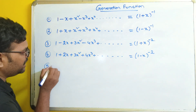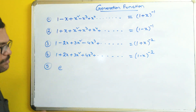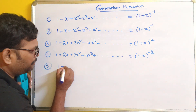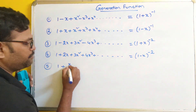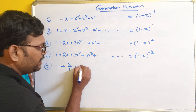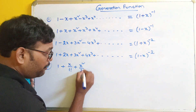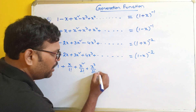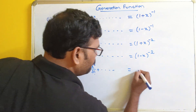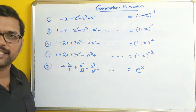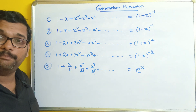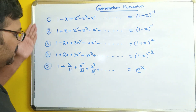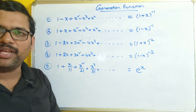The next case is e to the power x. We all know that e^x equals 1 plus x over 1 factorial plus x squared over 2 factorial plus x cubed over 3 factorial and so on. So the function is e^x. These are the few formulas we have to remember.